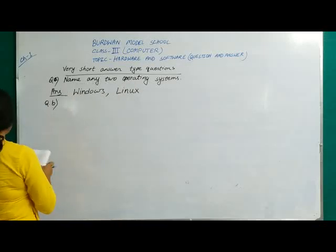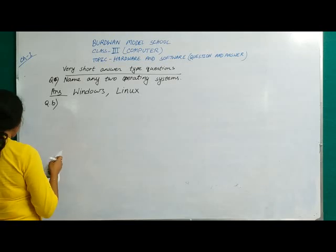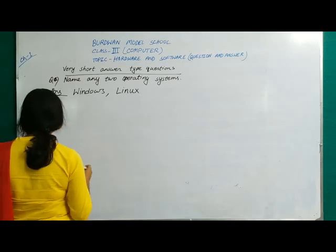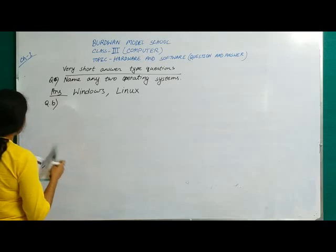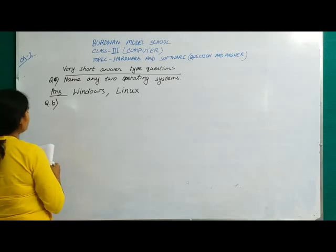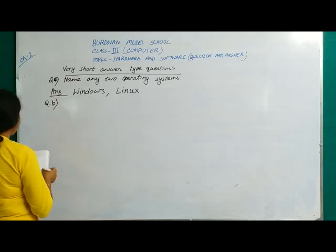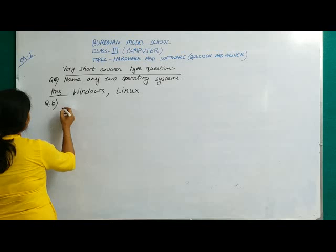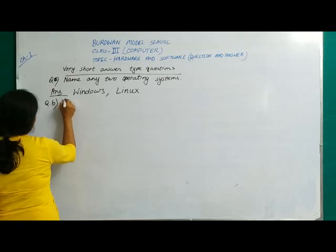The speaker, printer, plotter, and monitor are output devices. So for input devices, the keyboard and mouse are the main ones. Write: keyboard and mouse as the answer for any 2 input devices.